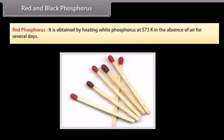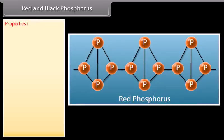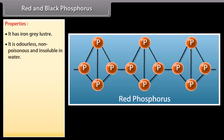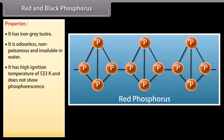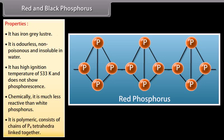Red phosphorus is obtained by heating white phosphorus at 573 Kelvin in the absence of air for several days. It has iron grey luster and is odorless, non-poisonous and insoluble in water. It has a high ignition temperature of 533 Kelvin and does not show phosphorescence. Chemically, it is much less reactive than white phosphorus. It is polymeric, consisting of chains of P4 tetrahedra linked together.